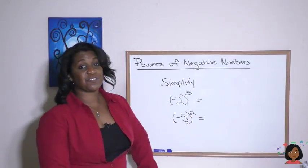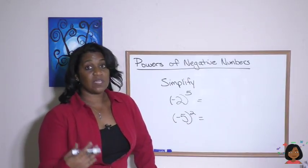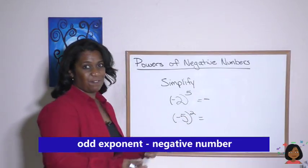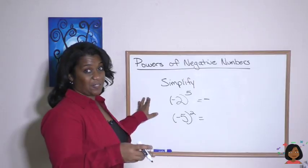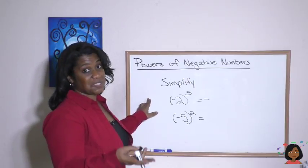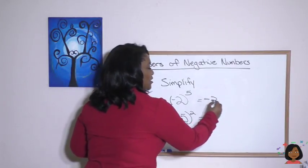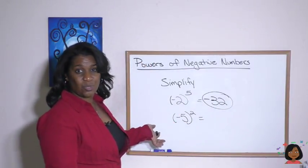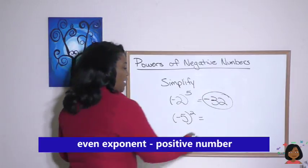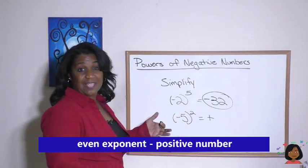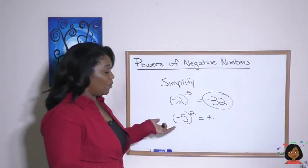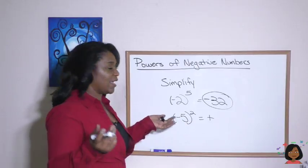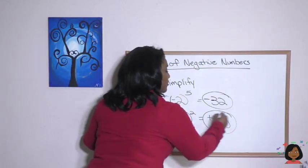Let's try two more problems. Negative 2 raised to the fifth power — 5 is odd, so our answer will be negative. Raise 2 to the fifth power: 2 times 2 is 4; 4 times 2 is 8; 8 times 2 is 16; 16 times 2 is 32. So negative 32 is our answer. For the next one, the exponent is 2, which is even, so our answer is positive. Negative 5 times negative 5 — just do 5 times 5, which is 25. Positive 25 is our answer.